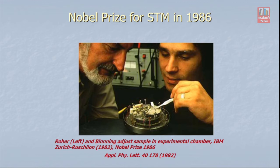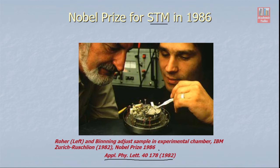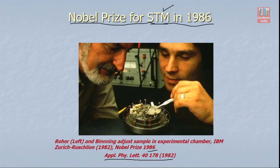This photograph shows the scientists who developed the scanning tunneling microscope, working on their STM system. They published their work in 1982 in Applied Physics Letters. For this work they received the Nobel Prize in Physics in 1986. The Nobel Prize was awarded in 1986 for the development of this STM technology, showing how important this development was.